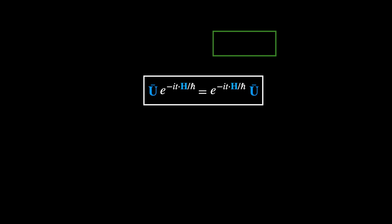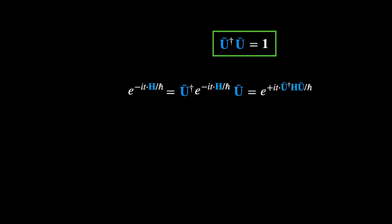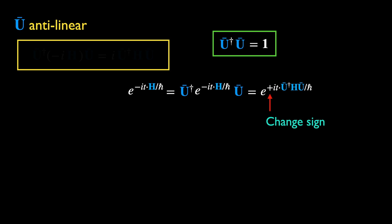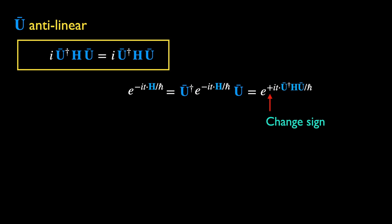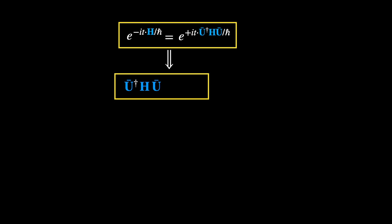Let's rearrange this equation by using an identity. This allows us to bring in U-bar dagger times U-bar to enclose H. This move is very similar to the case of a unitary operator, apart from one key distinction: there is a change of sign for the imaginary i. This is because U-bar is antilinear, and so is U-bar dagger. This means that when U-bar dagger moves past minus i, we must take a complex conjugation, turning it into i. From the equation at the top, comparing the exponent on both sides, we can conclude that H under an anti-unitary transformation becomes minus H.